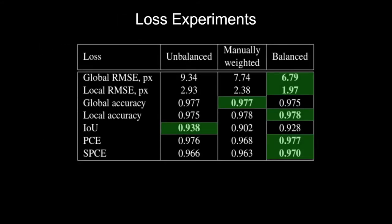We also studied our loss function choice and compared it with simple summation of all components, manual balancing, and our proposed auto-balancing technique. As you can see, auto-balancing was the most beneficial choice for most metrics.